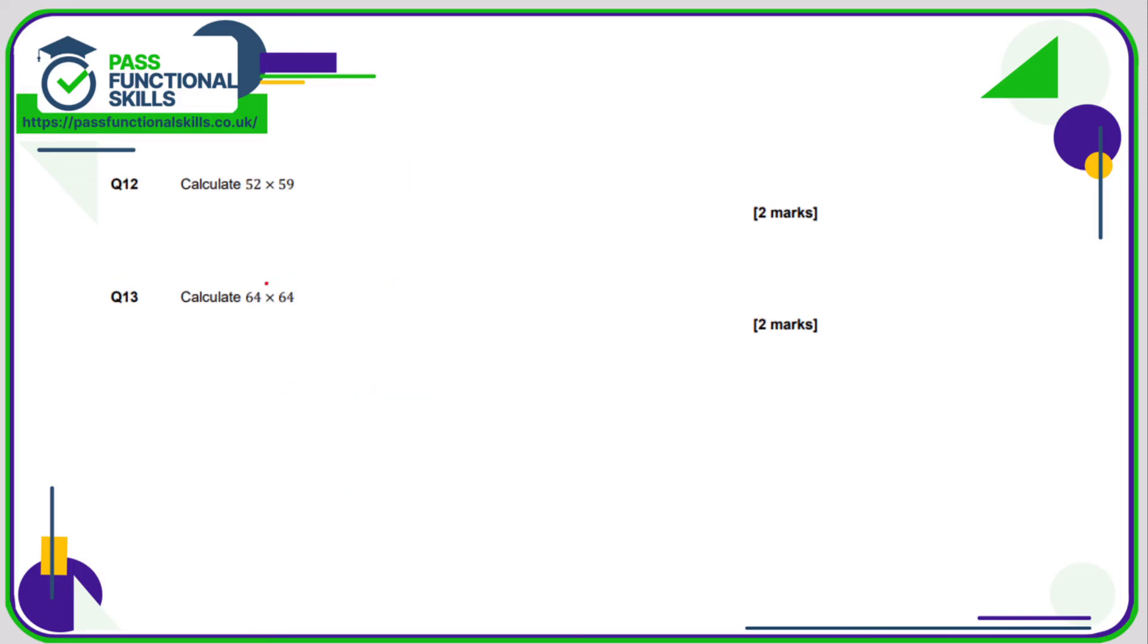Question 12 and 13. Again using the calculator, just type it in 52, hit the multiplication sign 59, then hit the equal sign. You'll get 3, 0, 6, 8 and if you do exactly the same thing with 64 and 64, you should get the answer 4, 0, 9, 6.